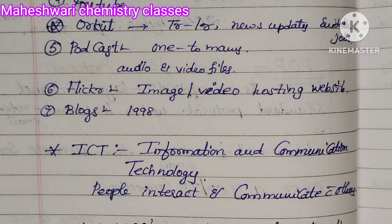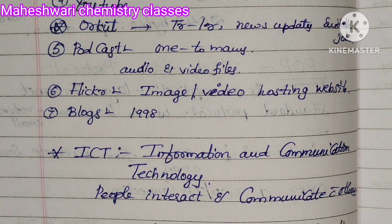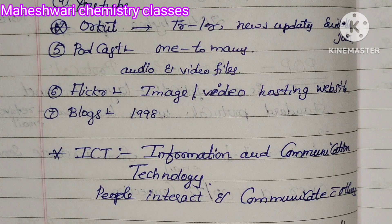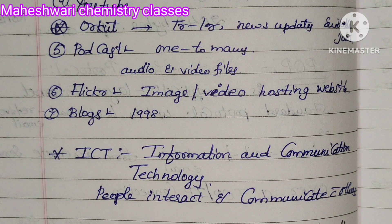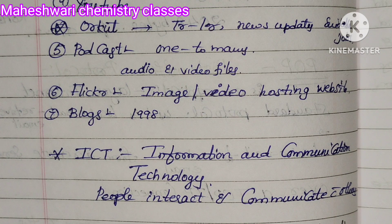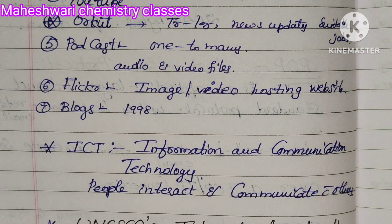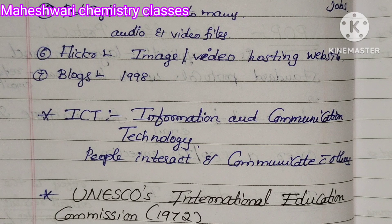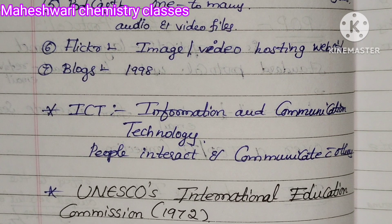ICT — Information and Communication Technology. People interact and communicate with others with the help of ICT. According to UNESCO's International Education Commission in 1972, ICT plays a key role.